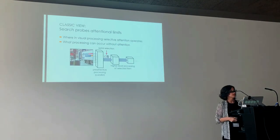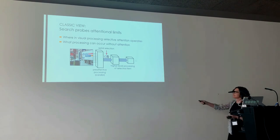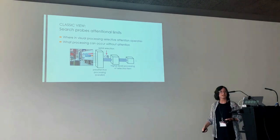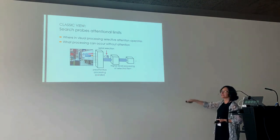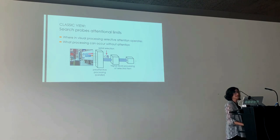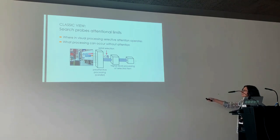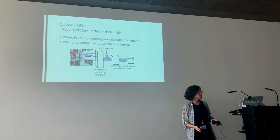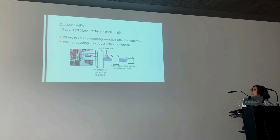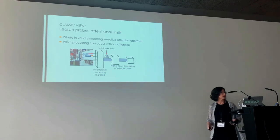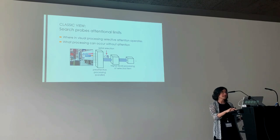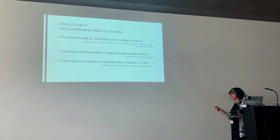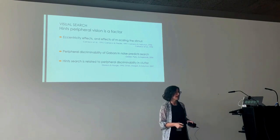What about search? The idea with search and feature integration theory is that you have image input, you do some parallel processing extracting pre-attentive features, and then there's serial selection, after which the selected item gets access to higher-level processing. A lot of search experiments were thought to probe where selective attention operates and what kind of processing can happen pre-attentively. This was the story for decades in the human vision field, and yet there were hints that peripheral vision was a factor nonetheless.